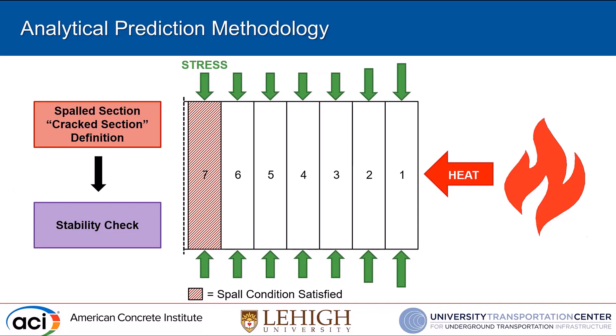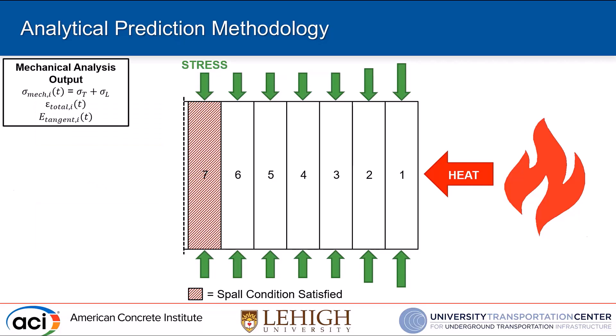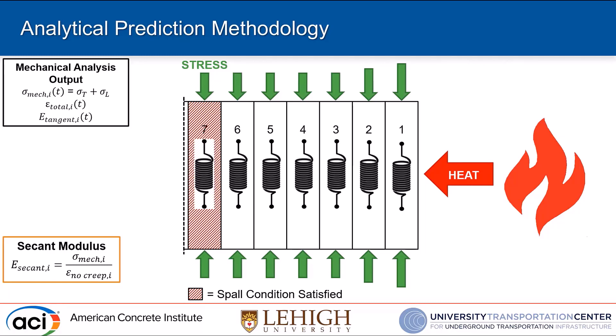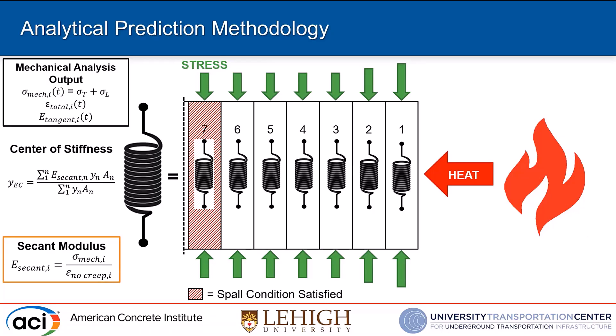We then evaluate stability — this is where we differ from other methods. We take the mechanical analysis output and develop a secant modulus: the mechanical stress divided by strain, but with creep removed from the total strain, allowing like-for-like comparison across fibers at different temperatures. We assign a stiffness to each fiber and an equivalent stiffness for the entire section, which lets us find the center of stiffness. This approach was originally developed for steel column sections by Marie Garlock and Spencer Quill at Princeton in 2007; we've adapted it for concrete by removing the creep strain.